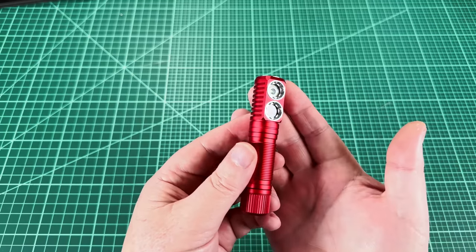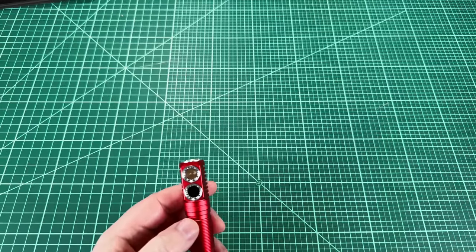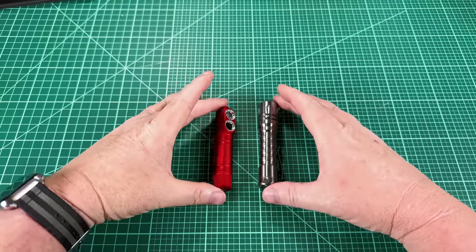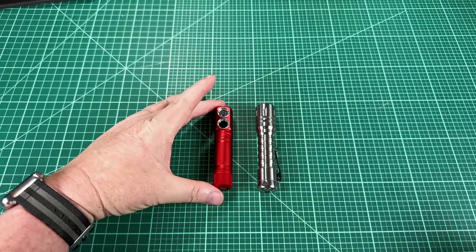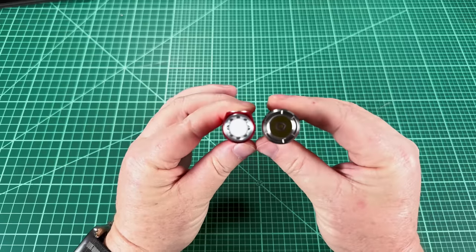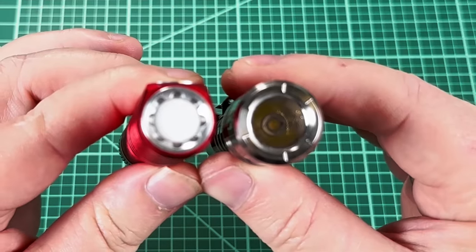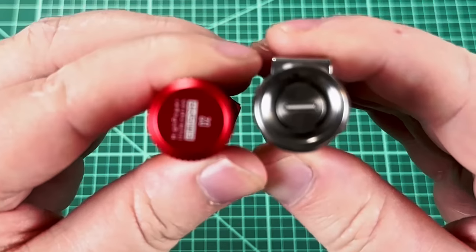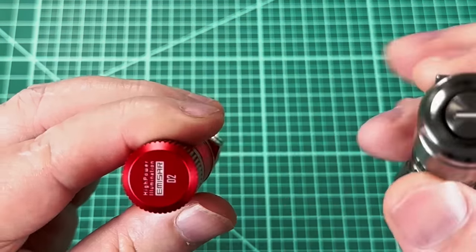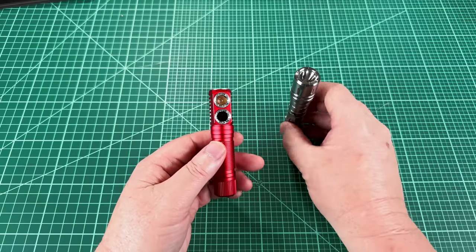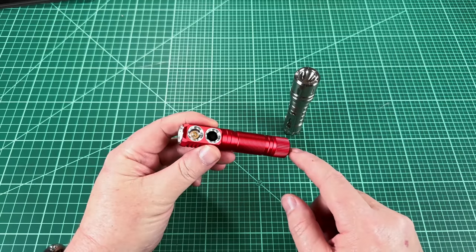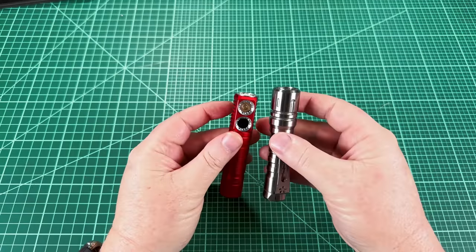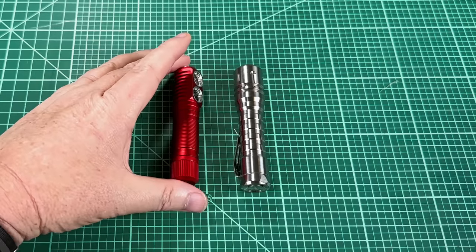So let's dive in and take a look at just how small this guy is. If we take a look against a Reylight Pineapple or LAN, you can see that it is shorter. You can see that it is actually probably even a little smaller in diameter. And because of the fact that it's shaped at a right angle, you're able to get two heads for the size of a single flashlight.